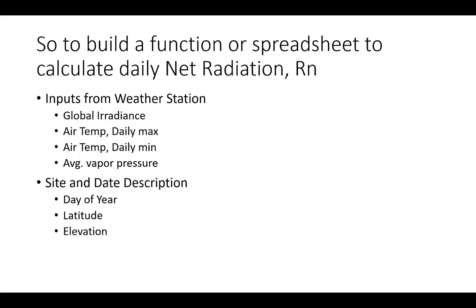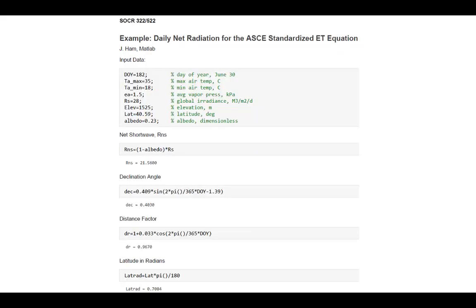I just did an example here in MATLAB Live Editor just to show you what it would look like and help you to build your own code or your own spreadsheet to do these calculations. You see my inputs up there at the top: day of year, maximum and minimum air temp, vapor pressure, global irradiance, elevation, latitude, and albedo. In all the ASCE formulas or reference crop ET formulas, we assume the albedo is 0.23. I start off with that simple calculation, the net shortwave: one minus albedo times global irradiance, 21 megajoules. I'm in good shape.